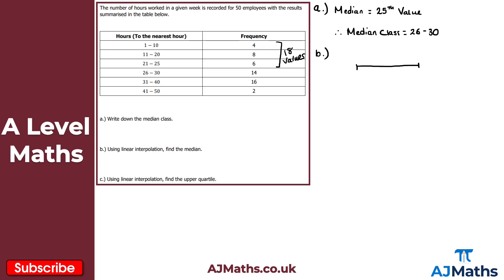Considering the class boundaries, just like we would for a histogram, the lower class boundary is 25.5 and the upper class boundary is 30.5. Somewhere between these two values, the median lies — I'll call this Q2, placed somewhere in the middle.